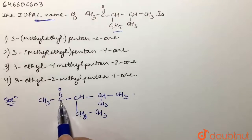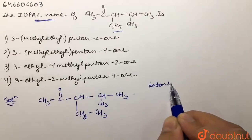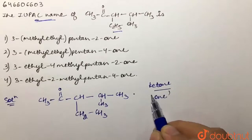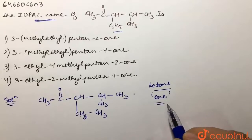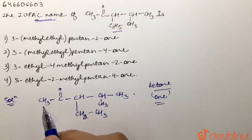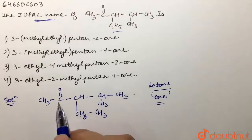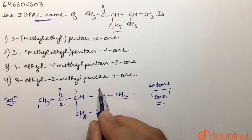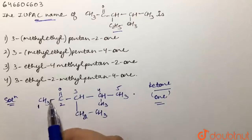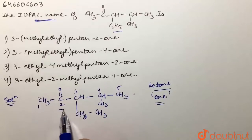We'll start our numbering from the left-hand side because we have the CO functional group — which is our ketone — present there. For a ketone, we use the suffix '-one'. We start numbering from the left so that the ketone gets position 2. So position 1 is on the left, then 2, 3, 4, and 5.